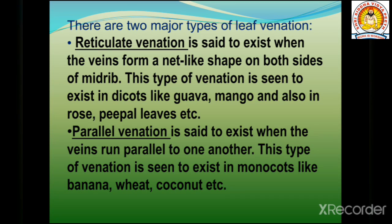Now there are two major types of leaf venation. The first one is reticulate venation, which exists when the veins form a net-like shape on both sides of the midrib. This type of venation is seen in dicots like guava, mango, rose, and peepal leaves.